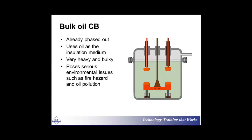When you think about the oil circuit breaker, this is very early technology — bulk oil. The two contacts of the circuit breaker are submerged in oil. As soon as the circuit breaker operates, the arc is established under the oil, and the oil prevents it.